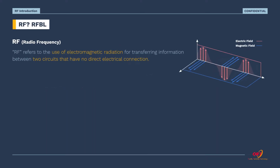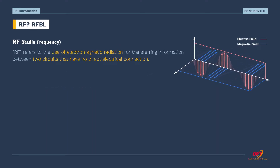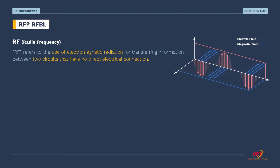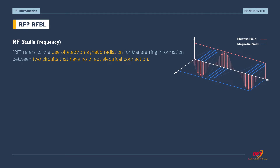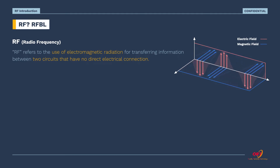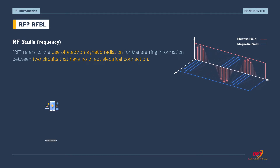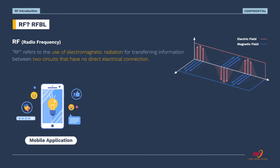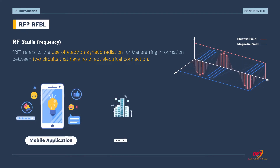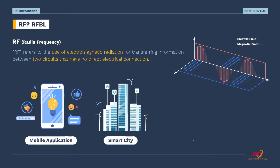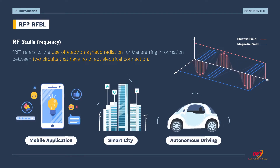So, what is RF? RF, which stands for radio frequency, refers to the use of electromagnetic radiation for transferring information between two circuits that have no direct electrical connection. RF devices are well known for mobile applications, smart city, and autonomous driving.